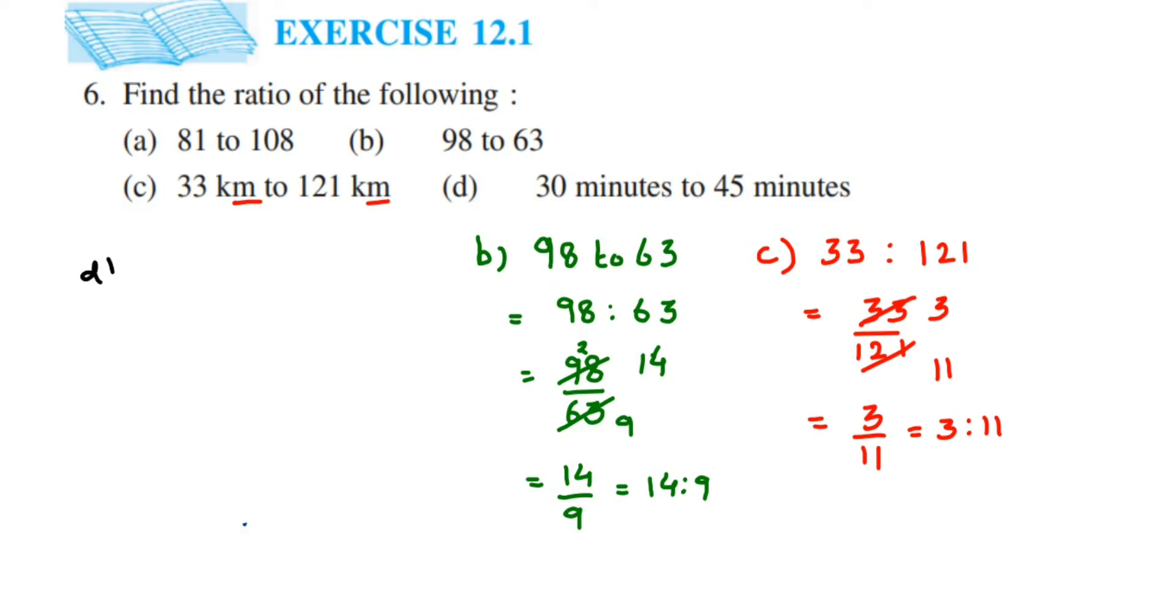Now next question, this is the last one. Here we have 30 minutes to 45 minutes. So both are in minutes, so this will be 30 is to 45. Whenever you're writing down the ratios, both units should be the same. So both are in minutes. This will become 30 is to 45. Convert this into fraction: 30 by 45.